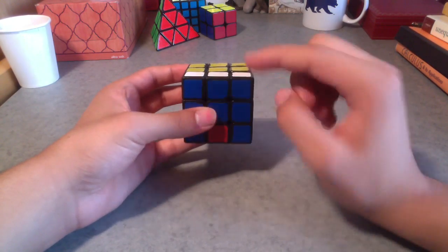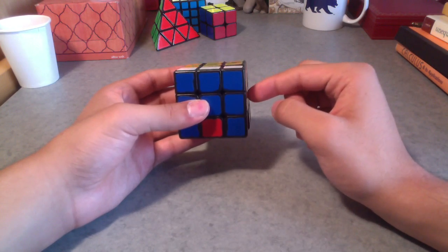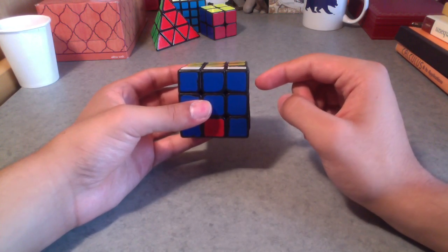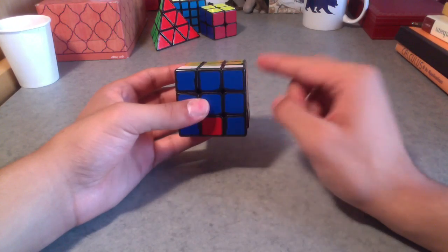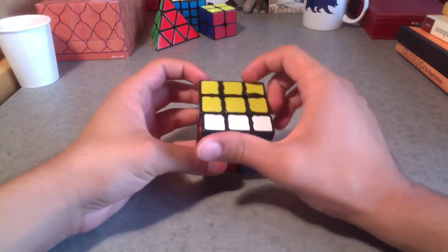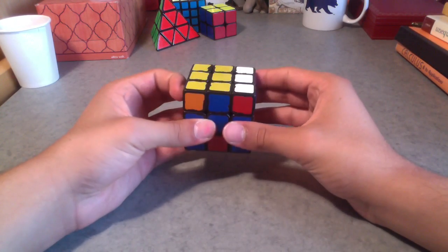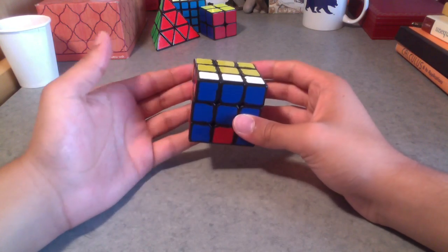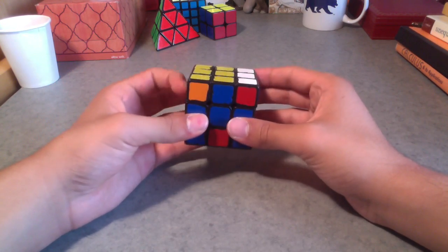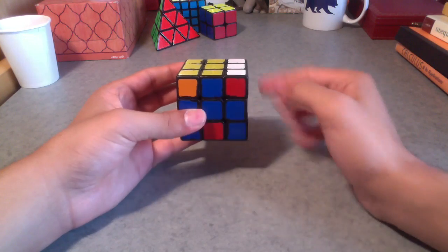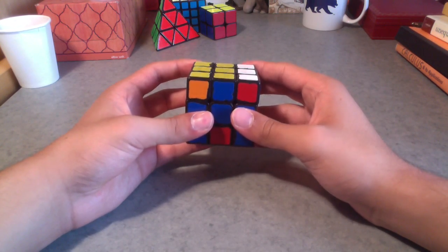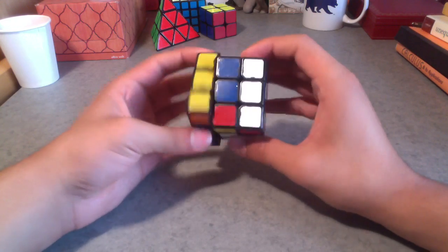So now this next move is based off of whichever side the piece has to go to. So it has to go to the right. So I move the top over, I do U prime. If it had to go to the left, I would do U. Okay? So now I did U prime because I have to go to the right. And this is the same for either algorithm. You do R prime L. Basically, you drag these both down.